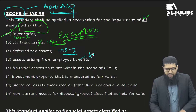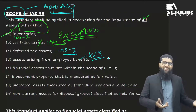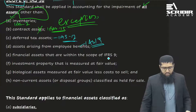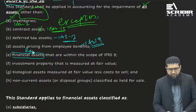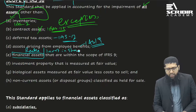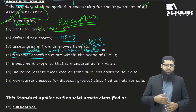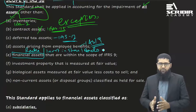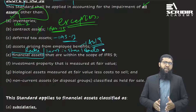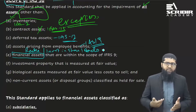IAS 19 employee benefits already applies another concept of prudence, so IAS 36 is not required there either. For financial assets — such as trade receivables, investments in shares, or investments in bonds — there is proper guidance available under IFRS 9 about the impairment of financial assets. Financial assets accounted for under IFRS 9 have proper impairment rules laid down under IFRS 9, so you don't have to apply IAS 36 to them.